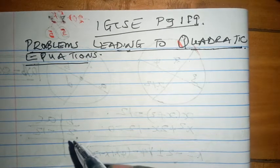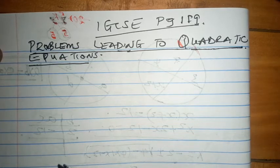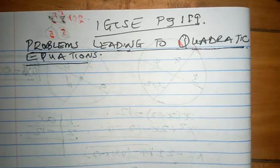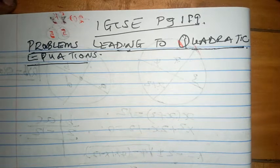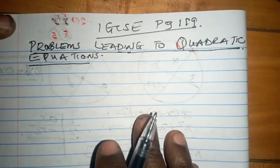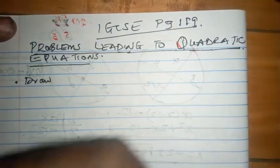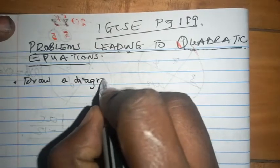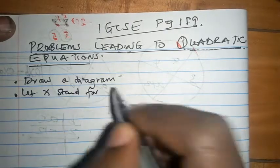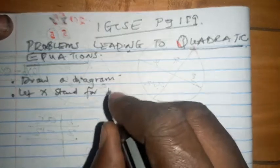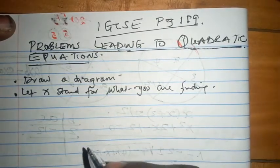There are some steps that you should know where relevant. If you have a situation and you think that a quadratic equation is going to be formed, please draw a diagram where relevant. And within the diagram, make X stand for what you are trying to find.